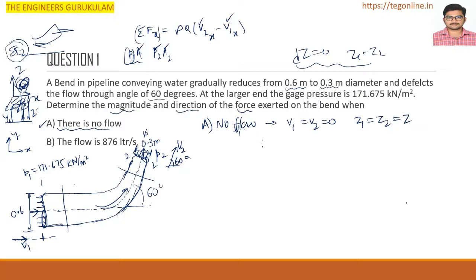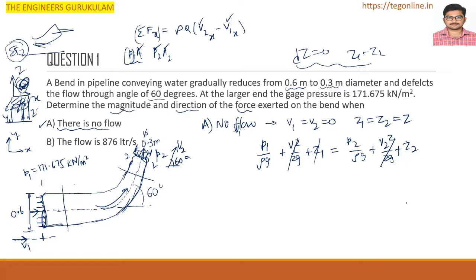Applying Bernoulli's equation: P1/(ρg) + V1²/(2g) + Z1 = P2/(ρg) + V2²/(2g) + Z2. Since flow is incompressible and velocity terms are zero, and Z1 = Z2, we get P1 = P2. Therefore P2 = 171.675 kN/m².